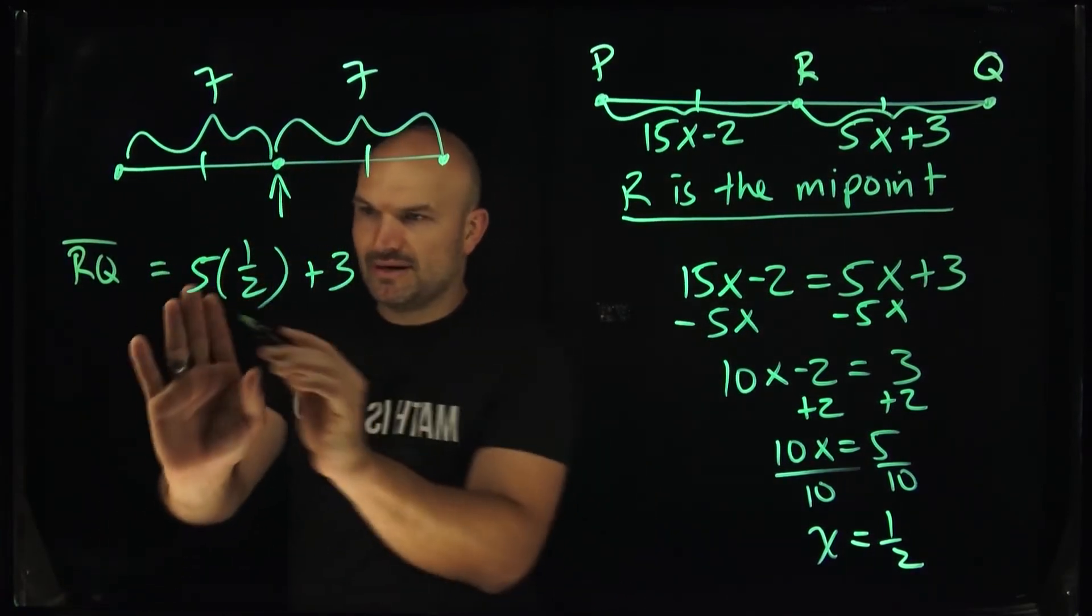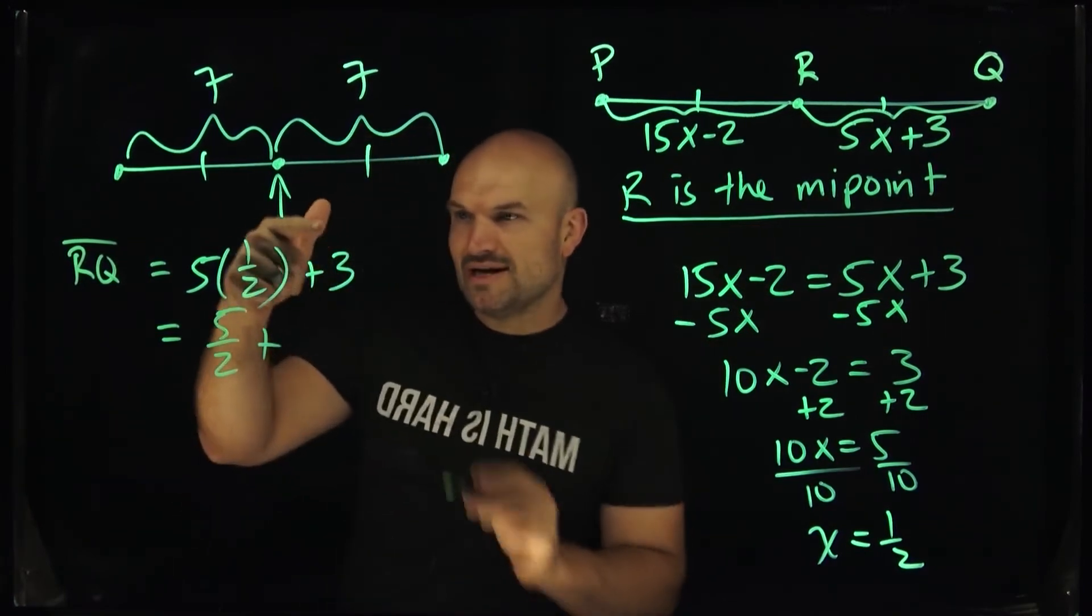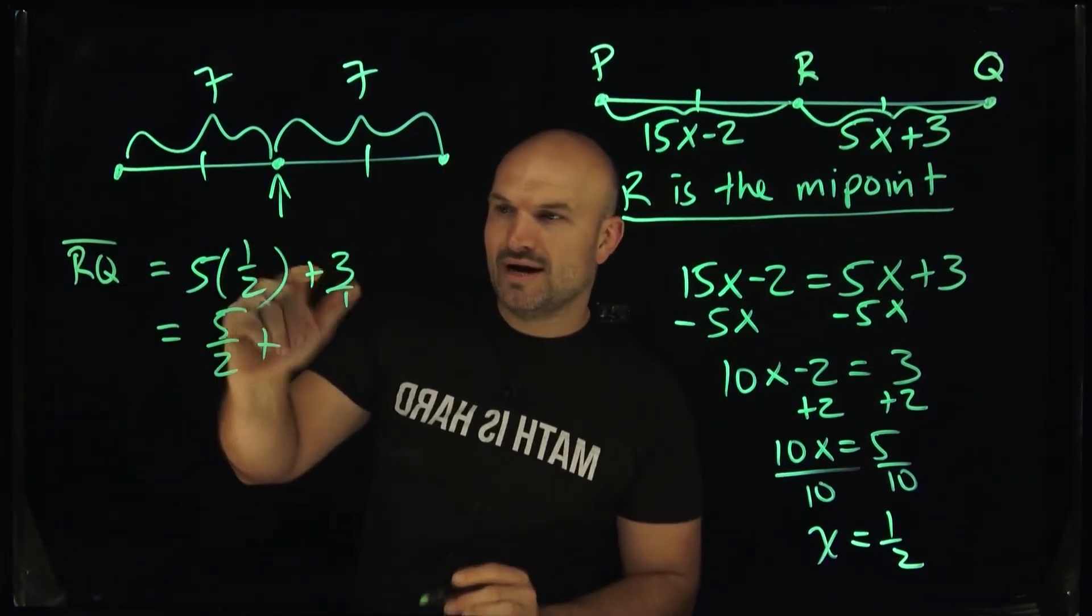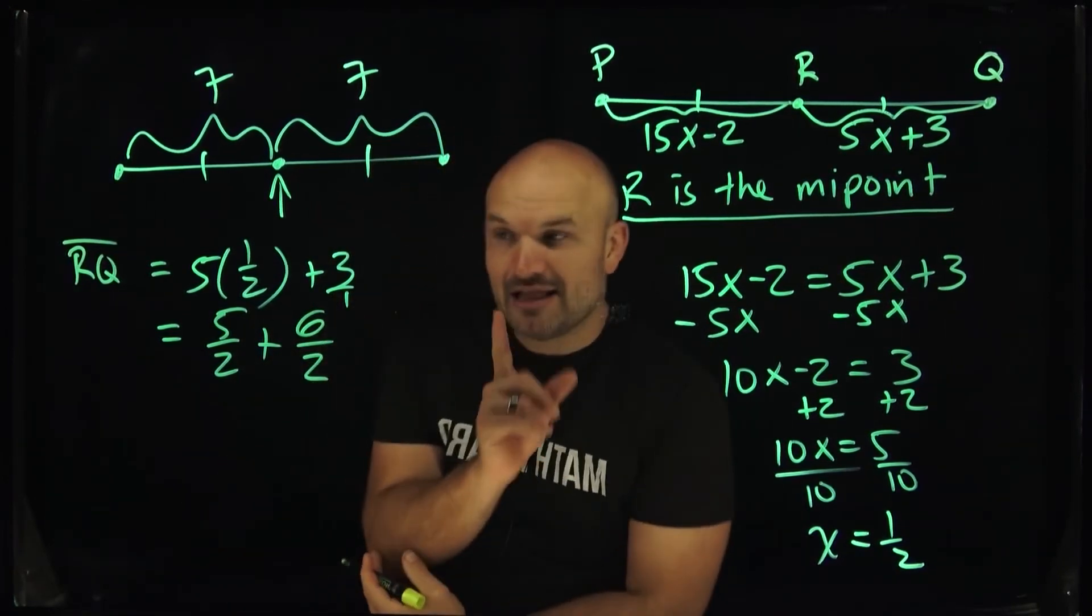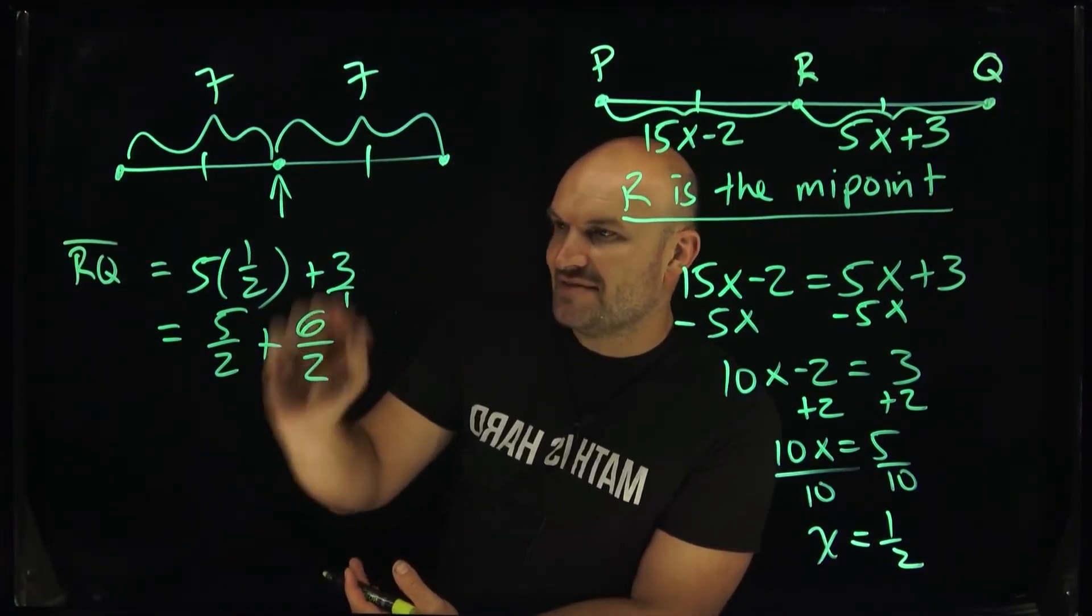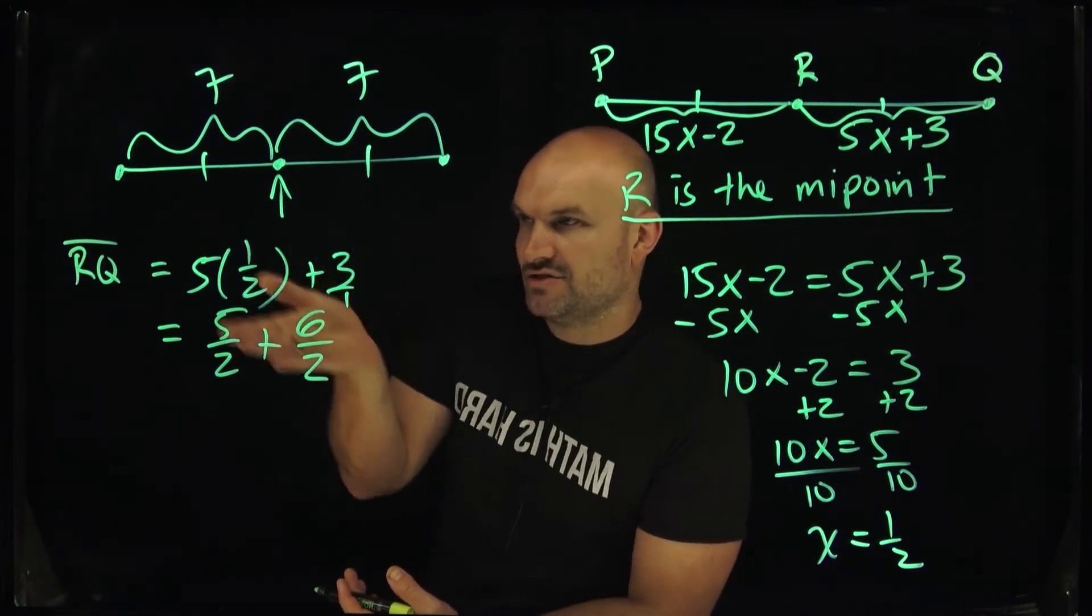All right, so now what I'm going to do is I'm going to multiply this across. So I'll have 5 halves plus—now, instead of writing a 3 as 3 over 1, I'm going to multiply by 2 over 2. So therefore, this is going to be 6 halves. Now, again, follow me. Isn't 6 halves the same thing as 3 over 1? Yeah, it's just being multiplied by 2. And isn't 3 over 1 the same thing as 3?